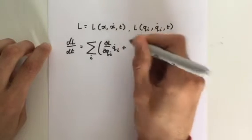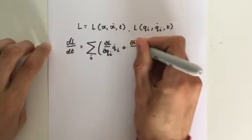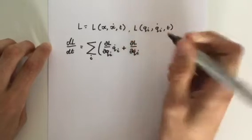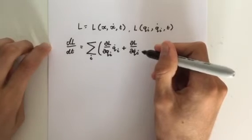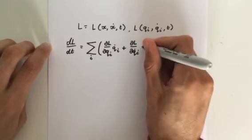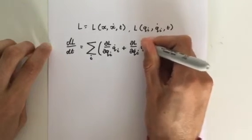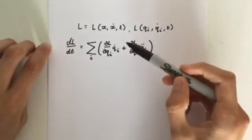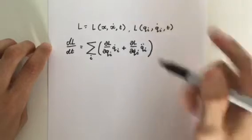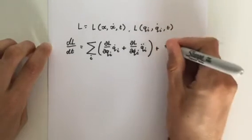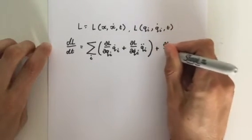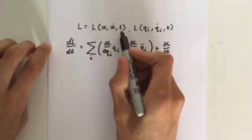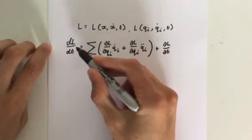Then we add dL/dq-dot-i, which is the velocity, times the rate of change of velocity, which is acceleration — in other words, q-double-dot-i. Now, because the Lagrangian has an explicit time dependence, we need to add dL/dt. Remember, we need to consider all three components when we're making the rate of change of a function.